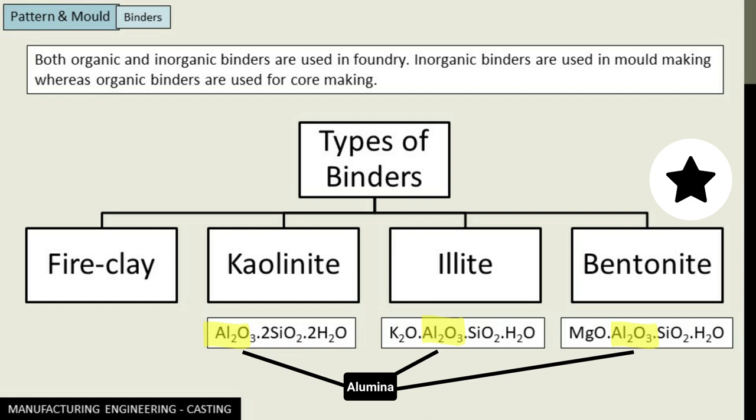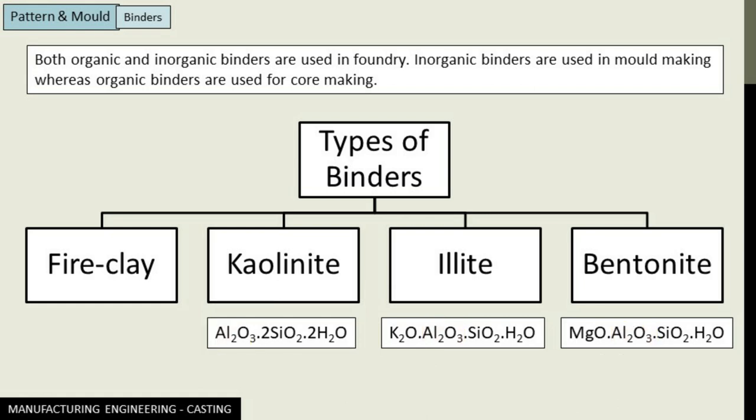Bentonite needs a smaller amount of water to obtain a certain given degree of plasticity. The percentage of binder in molding sand is of great importance — the bond must be strong enough to withstand the pressure and erosion by the melt, yet it must be sufficiently weakened by the heat of the metal to allow shrinkage of the casting and finally removal of the sand without damage to the solid casting.